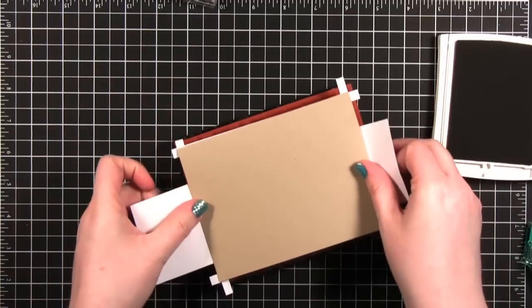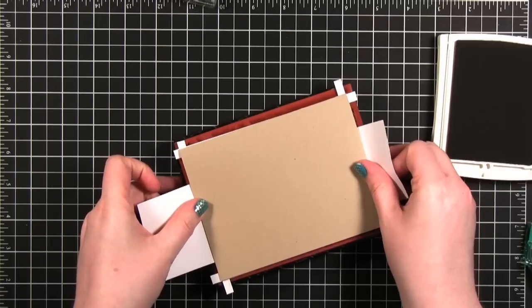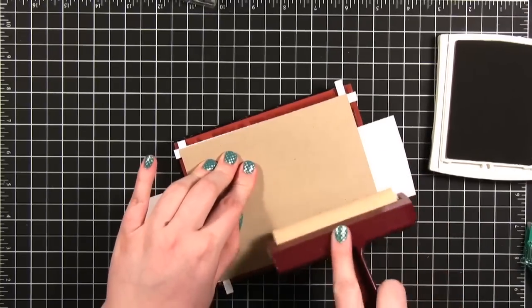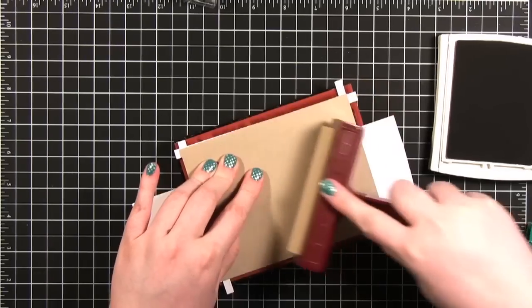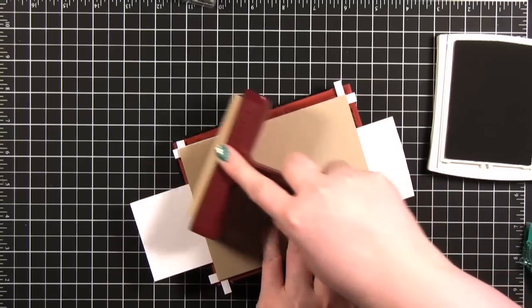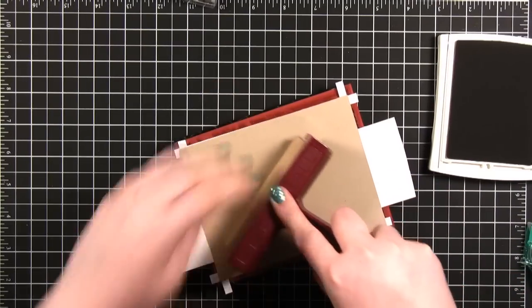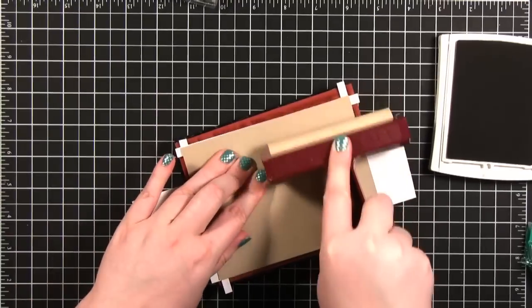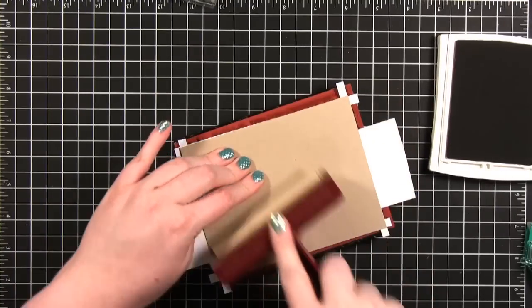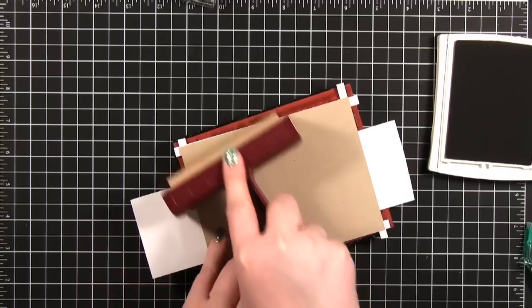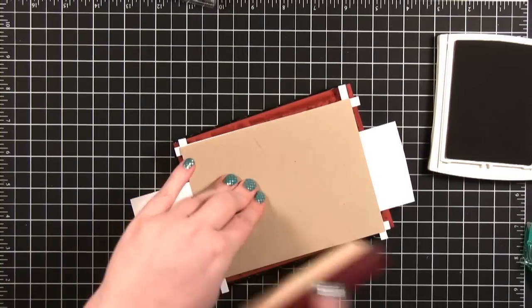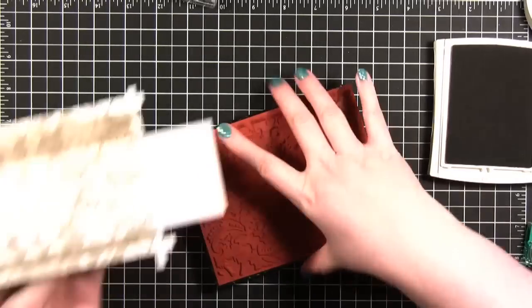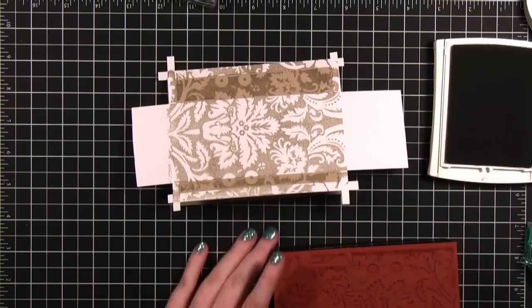I'm going to go ahead and place this down onto the card. I'm going to get a brayer. I'm just rolling over. You can use your hands to do this too. You don't have to have a brayer. This just really evenly gets that card pressed down onto the stamp. Okay. So you can see that design there. Really pretty.